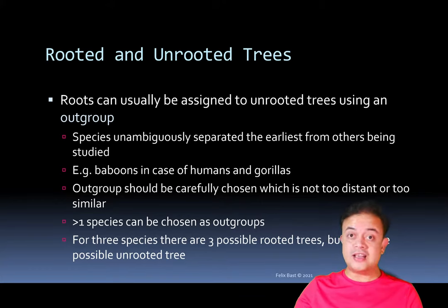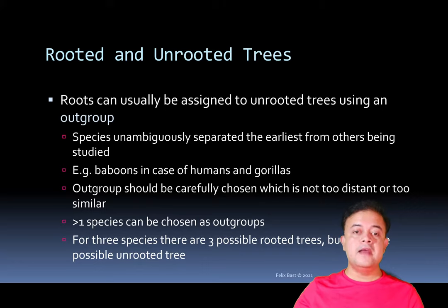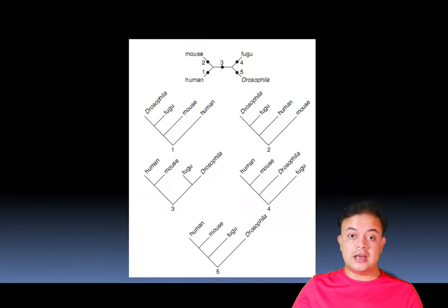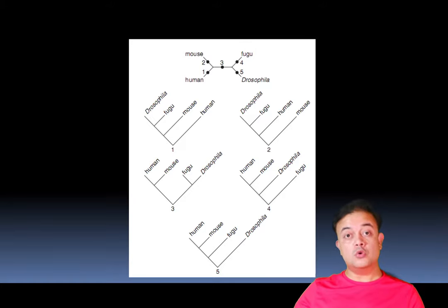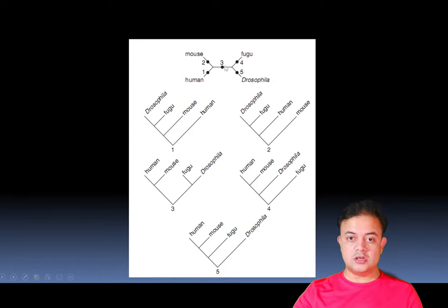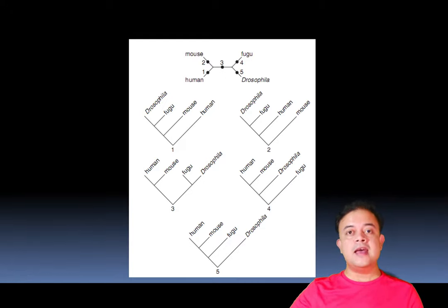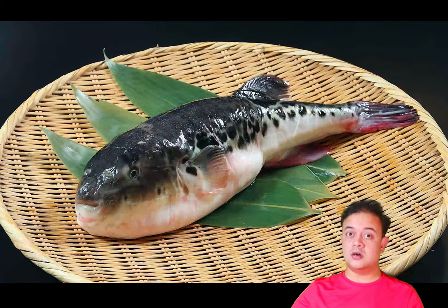An operational taxonomic unit (OTU) can be just one species or more than one species. If you use more than one species, the outgroup is a clade. For three species there are three possible rooted trees but only one possible unrooted tree. Rooted trees have many more possible combinations than unrooted trees. With an unrooted tree you can place the root on various branches to root it, and it also depends on the twisting of branches, so rooted trees are always far more numerous than unrooted trees.